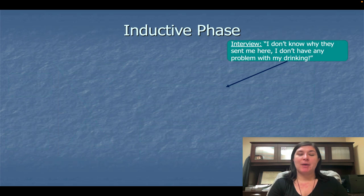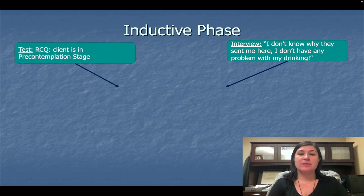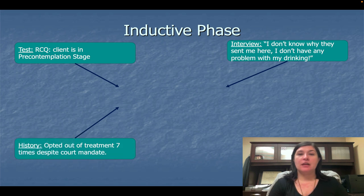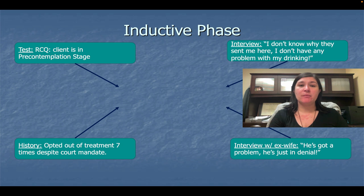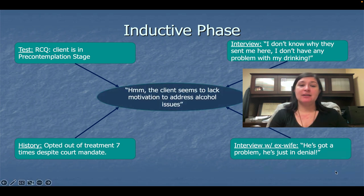Another way to look at this is through hypothesis testing. In the inductive phase, the interviewer asks why the client is here, and the client responds: 'I don't know why they sent me here. I don't think I have a problem with drinking.' We use a test — the RCQ — which tells us the client is in a pre-contemplation stage and in denial of a problem. We take history: the client opted out of treatment seven times despite a court mandate. We interview others close to the client — the ex-wife says he has a problem and is just in denial. This tells us the client seems to lack motivation to address alcohol issues.